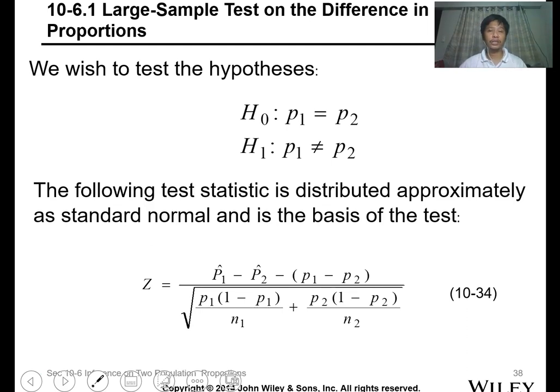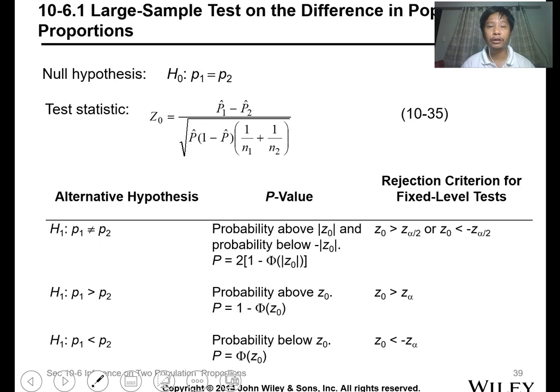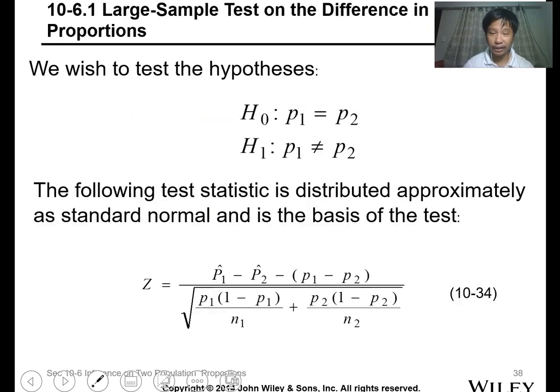When comparing proportions, you use this formula. It's a z-test for proportions. The null hypothesis is that the proportion of the two populations is the same. The test statistic uses this formula.